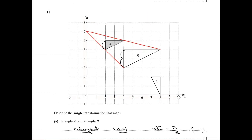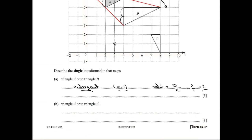Triangle A onto triangle C is a rotation. Using tracing paper, you can find that the center of rotation is three, one, and the triangle is rotated by angle 90 degrees clockwise.